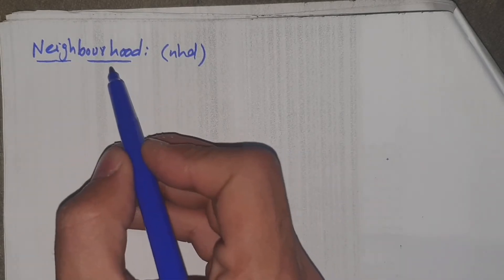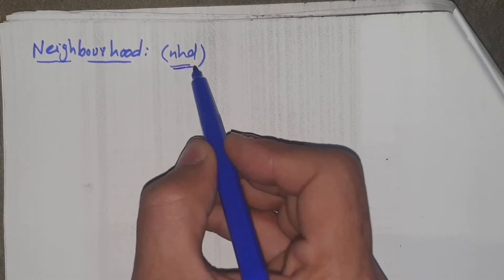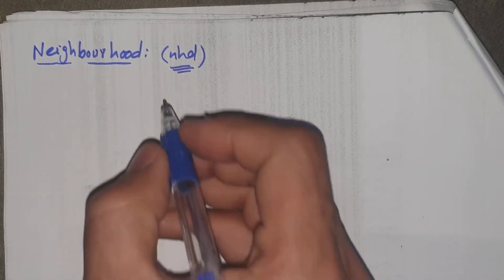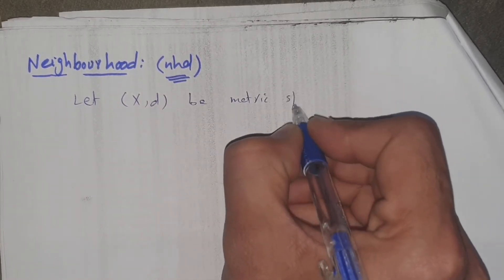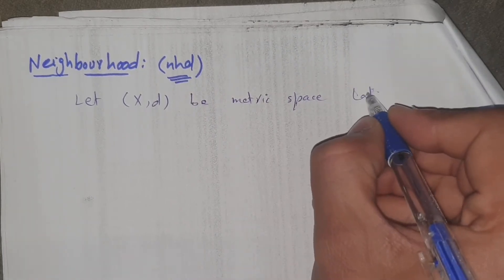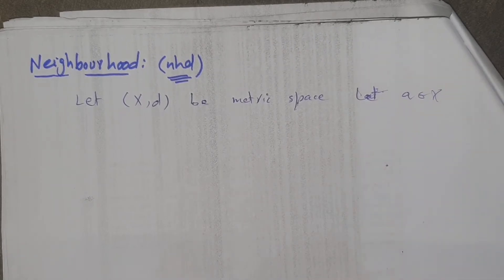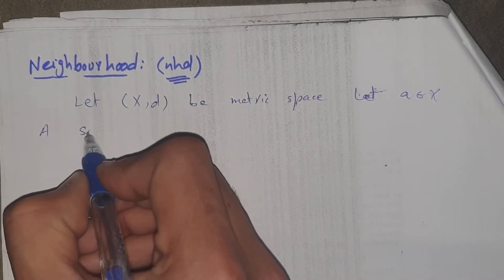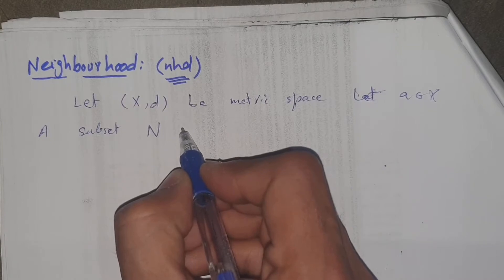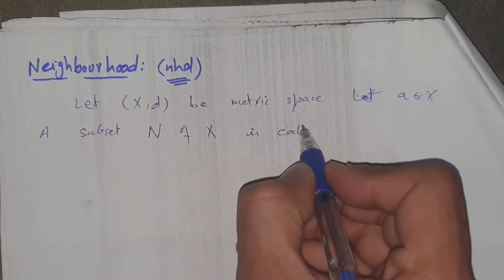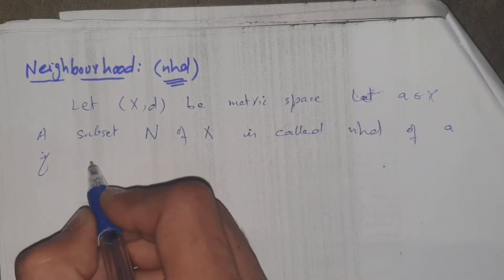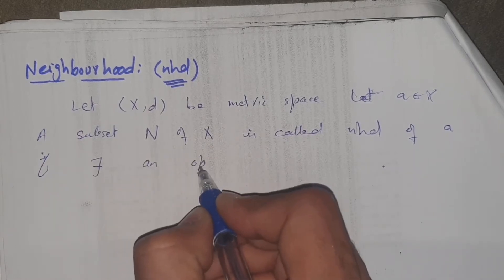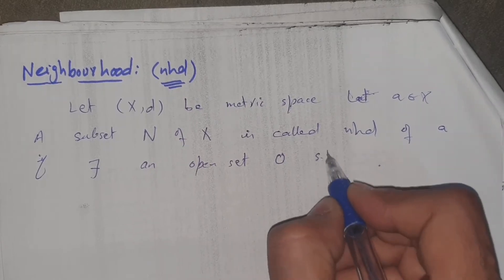Bismillahirrahmanirrahim. As you know, we start a lecture series on metric spaces. Today our definition is neighborhood, written in short form as NHD. Definition: let (X, d) be a metric space and let a element of X be an element. A subset N of X is called a neighborhood of element a if there exists an open set O such that...